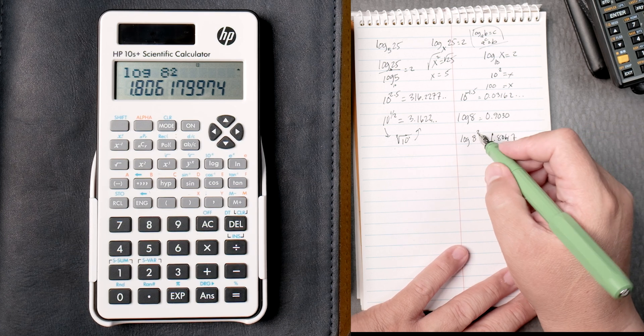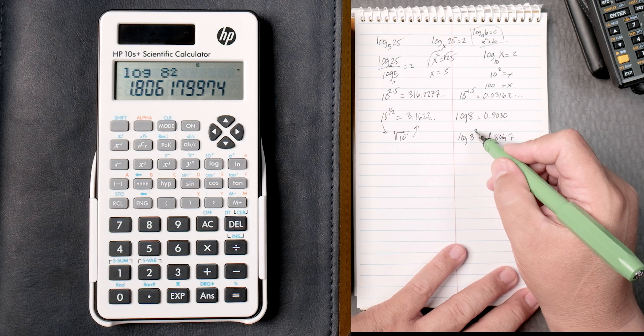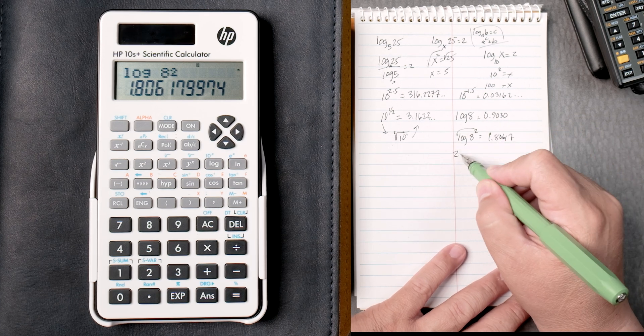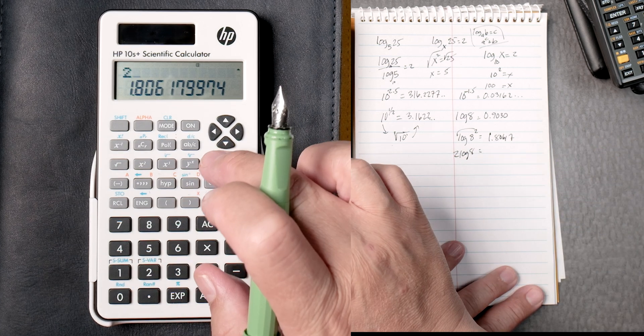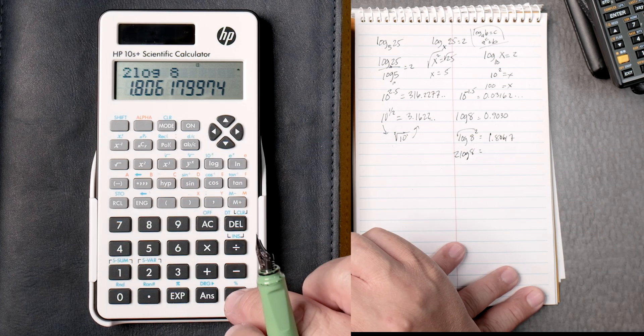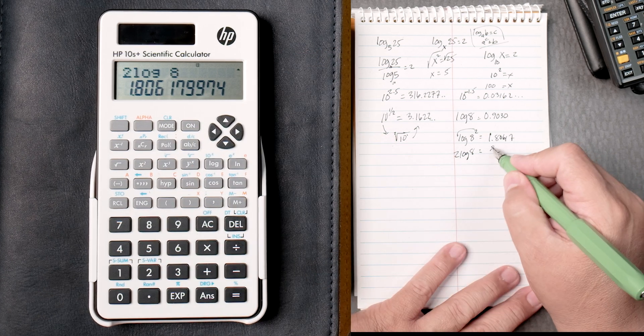That looks right. There is a math rule. You can bring the 2 down. 2 log 8. So you can say 2 log 8, and that should be automatically multiplied. Equals. It gives the same answer.